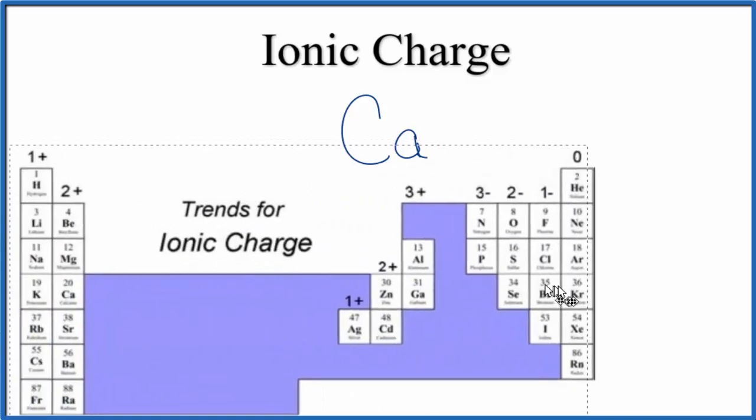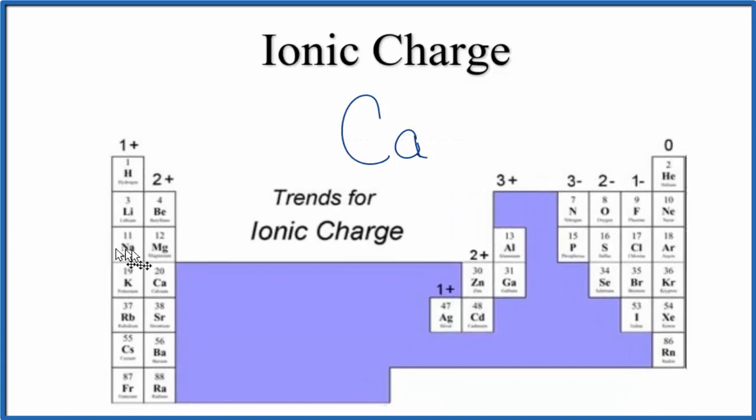So let's look at the periodic table here, and we can see the trend for ionic charge. Group 1, as we go down, all of these have a 1 plus ionic charge. In group 2, they're all 2 plus. Calcium, right here, is in group 2, so it has a 2 plus ionic charge.